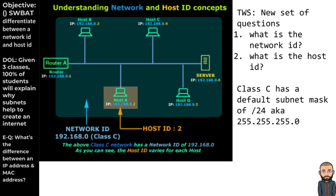The objective is: no matter whether we're talking about classful addressing or subnetting, you should still be able to identify the network portion and the host portion of an IP address. The answer shown in blue is the network ID. For this computer, the network ID is 192.168.0 — and for the other computer in the same network, it's also 192.168.0. The host ID is shown in orange. So the host IDs are 3, 4, 5, and 6 respectively. Class C has a default subnet mask of slash 24.